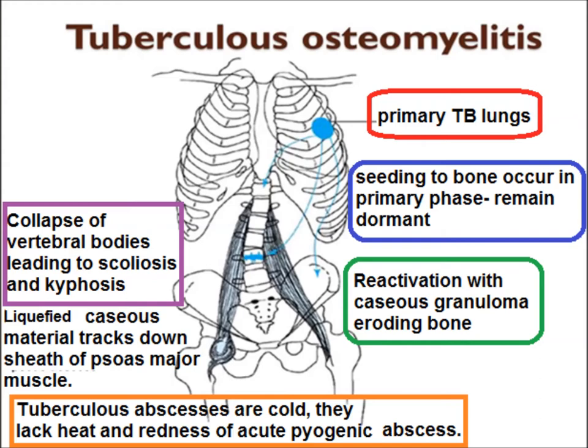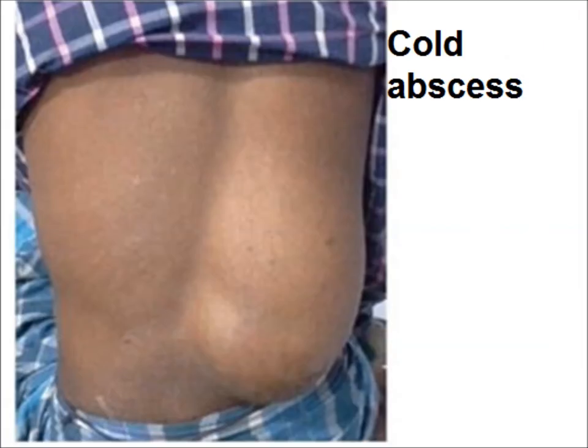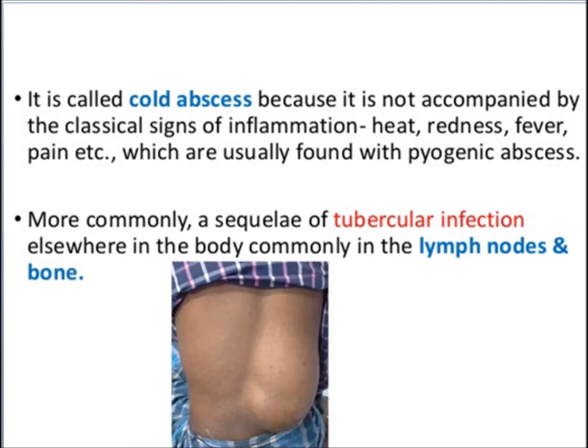This leads to collapse of vertebral bodies, causing scoliosis and kyphosis. Tuberculous abscesses are cold — they lack the heat and redness of acute pyogenic abscesses and they lead to psoas abscess. A psoas abscess is a cold abscess because it is not accompanied by classical signs of inflammation like heat, redness, or fever, which are usually found with pyogenic abscesses.